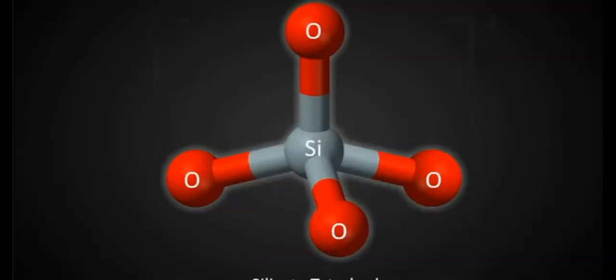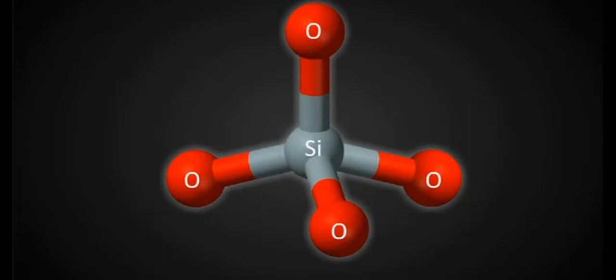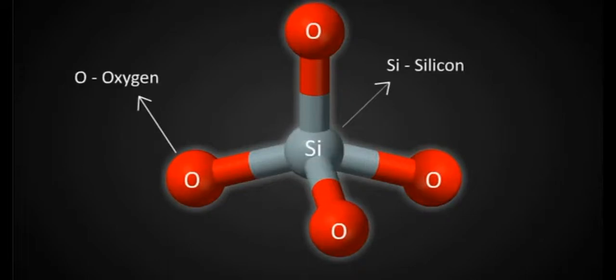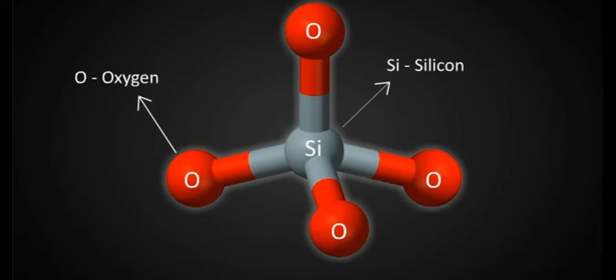Cyclic silicates. The basic building unit of all silicates is the tetrahedral SiO4⁴⁻ ion. In the SiO4⁴⁻ tetrahedron, the four oxygen ions are arranged at the four corners of the tetrahedron with the silicon atom at the center.